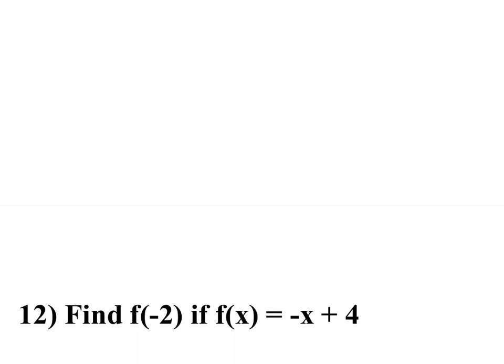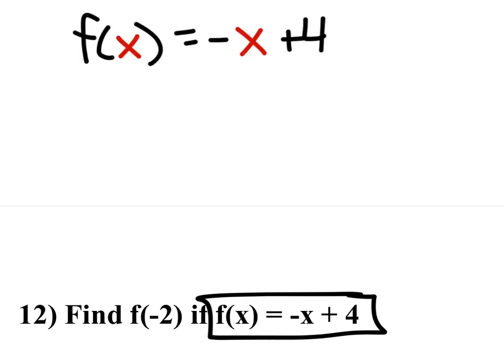So what I'm going to do is I'm going to write our original function. I've got f of x equals negative x plus 4, but we want f of negative 2.